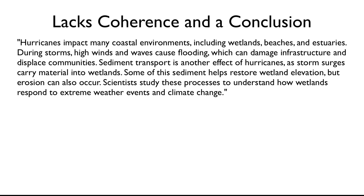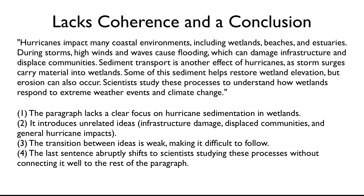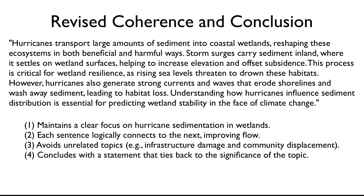Another problem is that a paragraph intended to explain something may lack a logical flow — the sentences don't really build on each other and the paragraph lacks coherence. Consider this paragraph: it lacks a clear focus on hurricane sedimentation and wetlands, introduces unrelated ideas such as infrastructure damage, displaced communities, and general hurricane impacts, and the transitions between ideas are weak, making it difficult to follow. The last sentence abruptly shifts to scientists studying these processes without connecting well to the rest. Here is a revision that flows better: it maintains a clear focus on hurricane sedimentation and wetlands, each sentence logically connects to the next, avoids unrelated topics, and concludes with a statement that ties back to the significance of the topic.